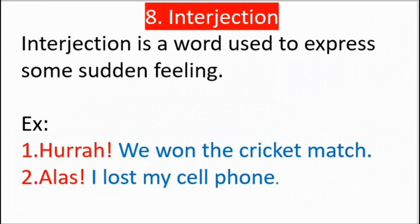Last — interjection. An interjection is a word that expresses sudden feelings — surprise, shock, sorrow, or happiness. Examples: 'Hooray! We won the cricket match.' Hooray expresses a happy feeling — it is the interjection. 'Alas! I lost my cell phone.' Alas expresses sorrow — it is the interjection. Hooray and alas are both interjections. That completes all eight parts of speech.